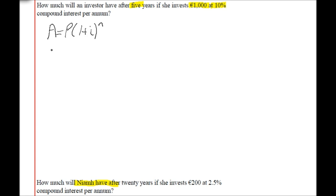So reading the question carefully, A is the final amount which we're looking for. P is the principal, how much we invest at the beginning, so in this case it's €1,000.